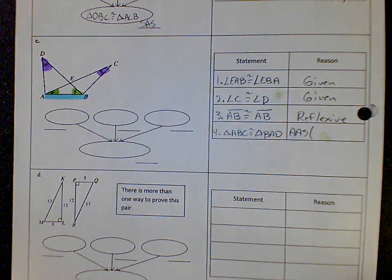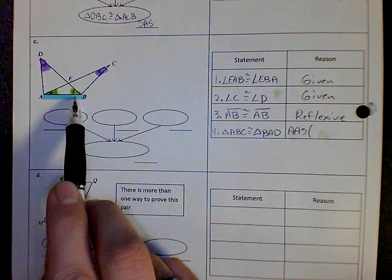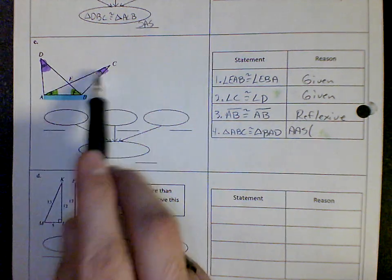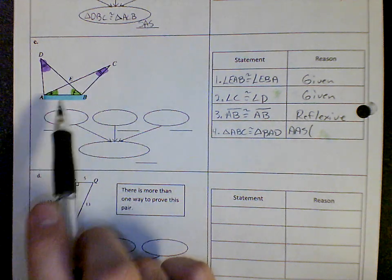Once again, if it was angle, side, angle, then the line that was congruent has to be in between the two angles. And it's not. So it has to be angle, angle, then the side.